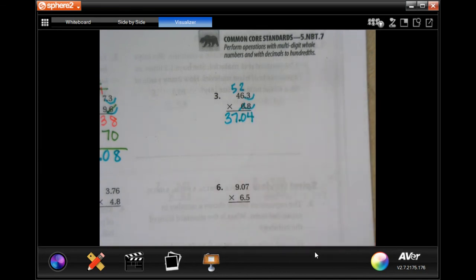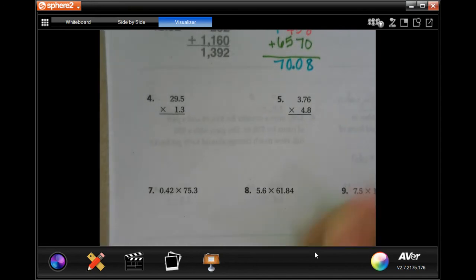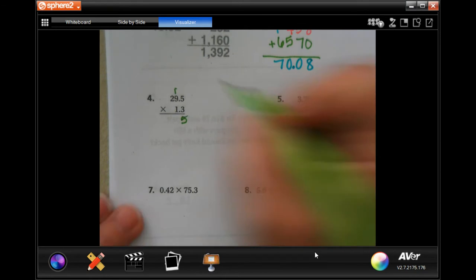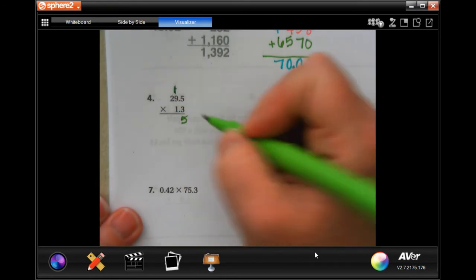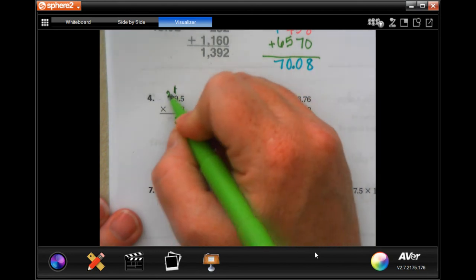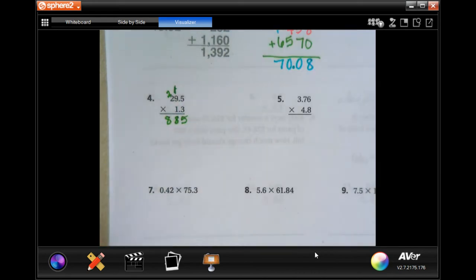We're going to do this one, number four. Three times five is fifteen, carry our one. Three times nine is twenty-seven, plus one more is twenty-eight, carry our two.